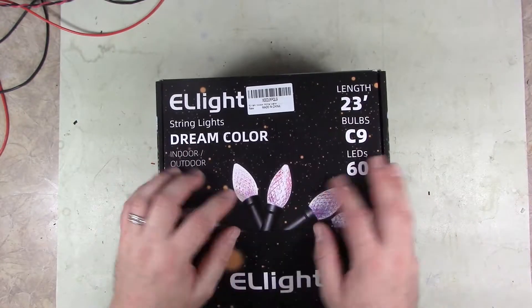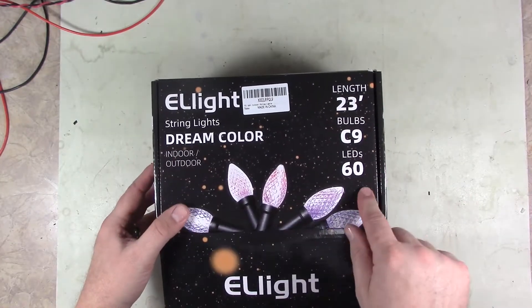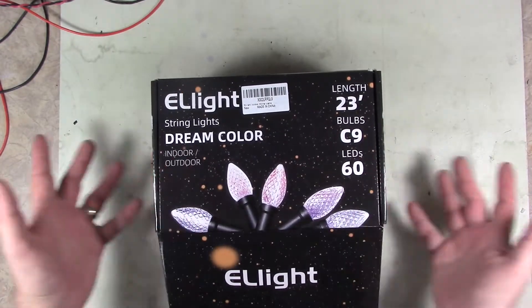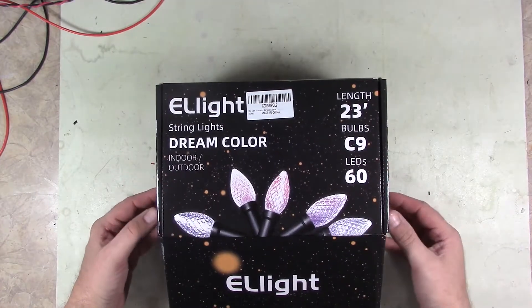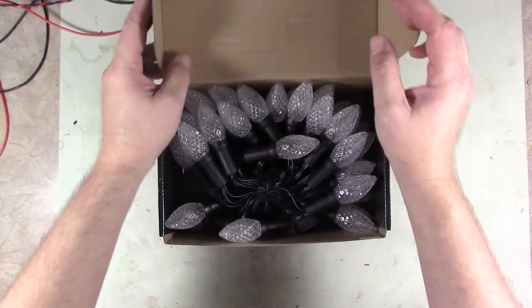So they're a little pricey, but not too bad. You get 60 LEDs with them. We're not going to need 60 because obviously the alphabet is not 60 letters long. But anyway, so let's open it up. What do we get?